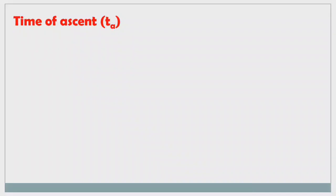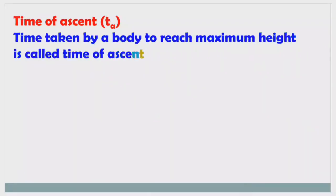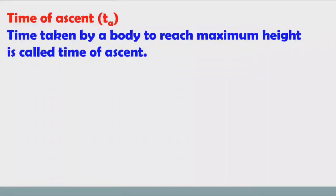Time of ascent is represented by TA. Time taken by a body to reach maximum height is called time of ascent. When we throw a body with certain velocity, it will take certain time to reach maximum height.